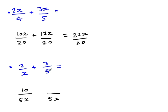Equally, this one, it's currently 5. How do I get from 5 to 5x? Times by x, so times the top by x as well. So I get this. Then I've got 10 plus 3x on the top, and I've got 5x on the bottom.